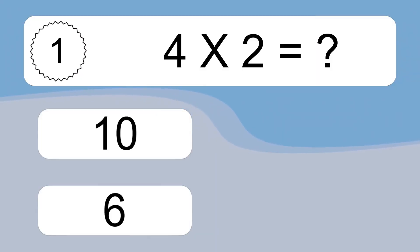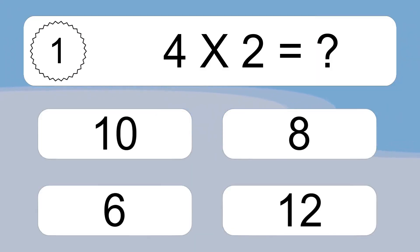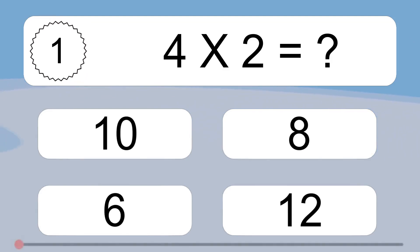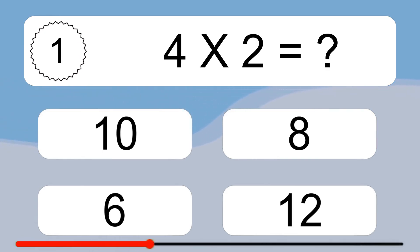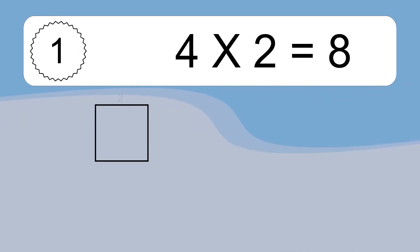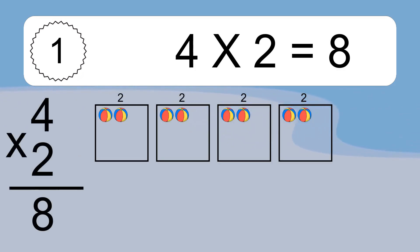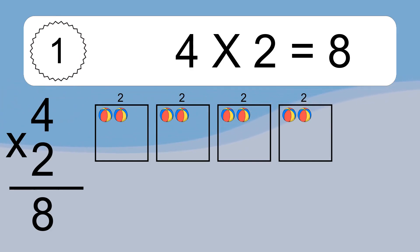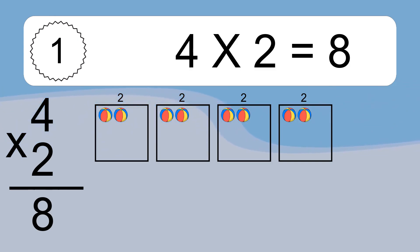4 times 2 equals what? 4 times 2 equals 8. We have 4 boxes, and each box has 2 colorful balls inside. If you count all the balls in all the boxes together, you will have 4 times 2 balls. This equals 8 balls.